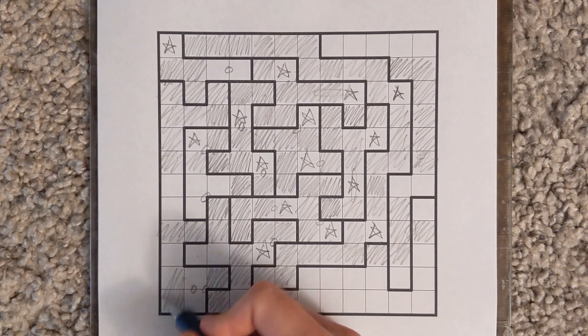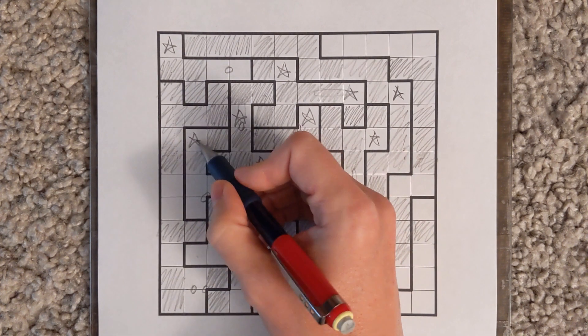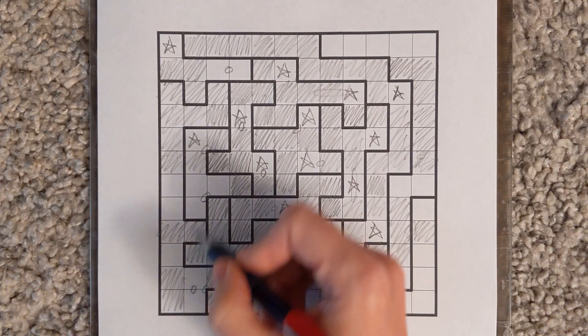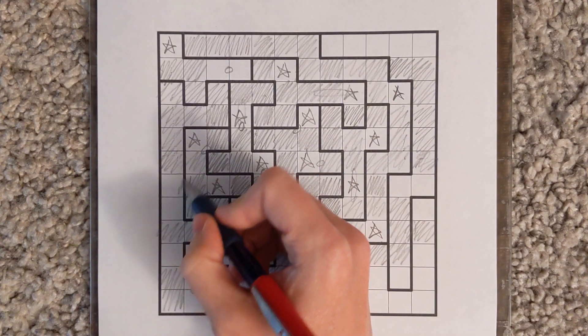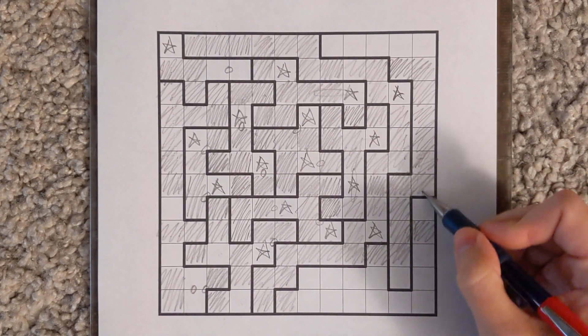These two stars now account for all in that column, so you can mark this in. It actually finishes this row. Coming back to how this shape had just enough space to take a star,